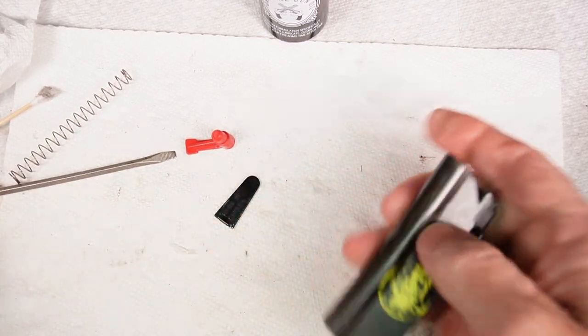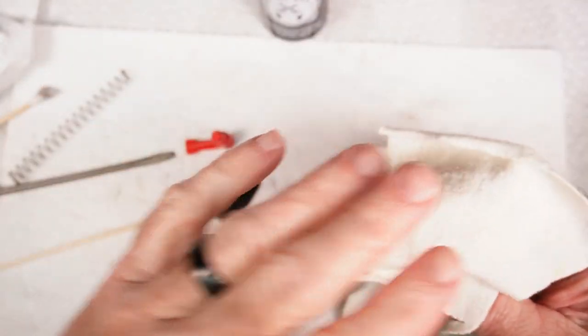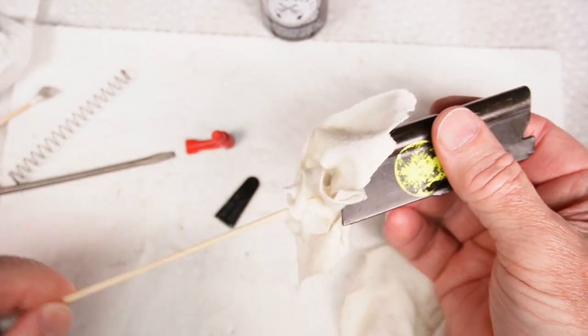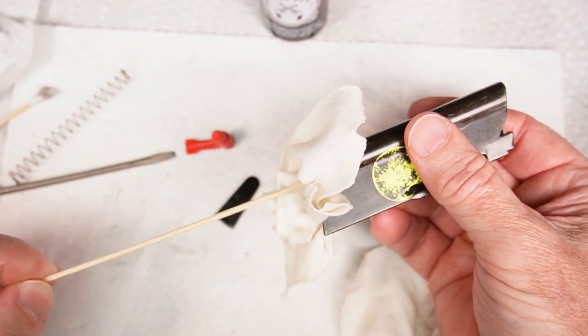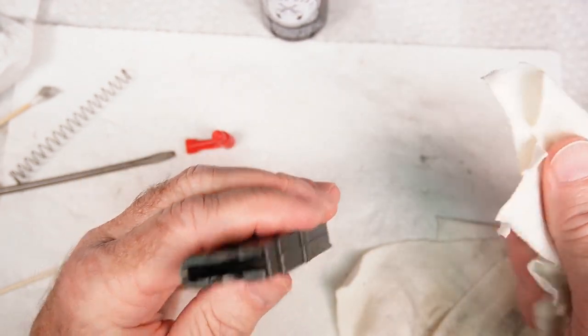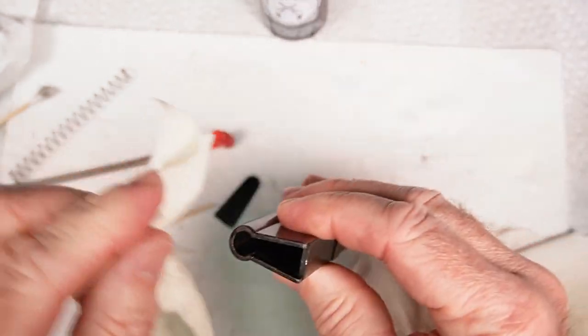And then what I'll do is get a clean, dry cotton rag—or even a paper towel will work fine here—and just push it through a couple of times to make sure you get all that oil up. Just push that through the tube. Do that a couple of times to get the oil out of there, and do a final wipe down.